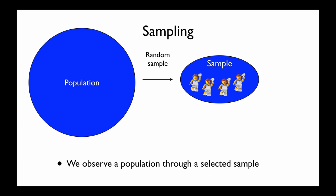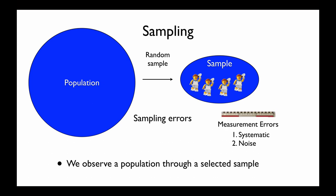So instead we select a sample from the population. When sampling, you are introducing sampling errors. The sample itself can't cover all the variation of the original population, and hence this limited selection of individuals will not always be representative for the entire population. In the process we also introduce measurement errors, which can be both systematic errors or biases, or random fluctuations or noise. All measurement errors are known as technical variations, but there is also biological variation between individuals that also affects sampling errors.